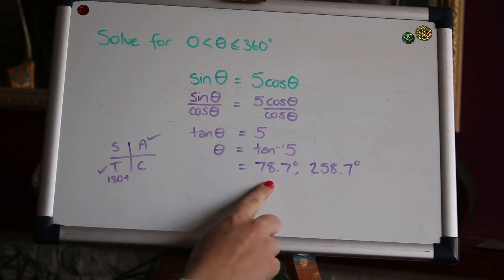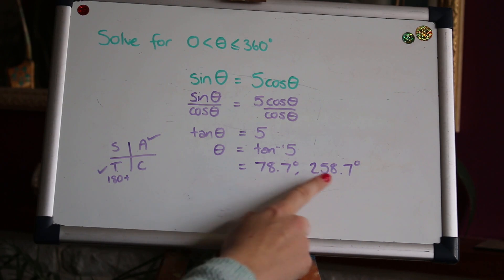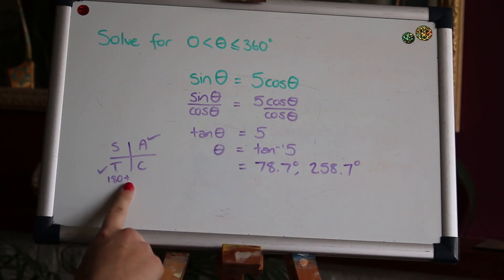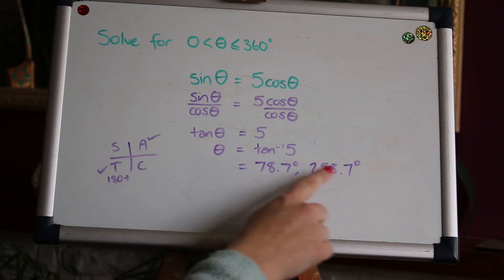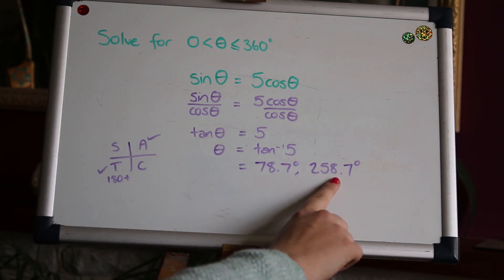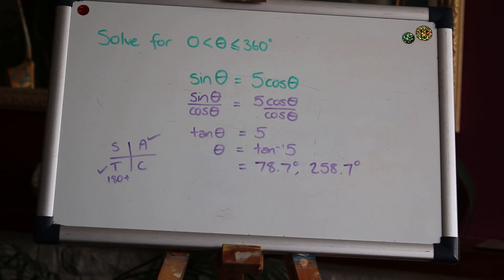Okay, so here I've got the first solution by using the inverse function on the calculator and then I've got the second solution using the Kass diagram and identifying that it's 180 degrees plus the first acute angle to get 258. You can do that using a tan graph as well.